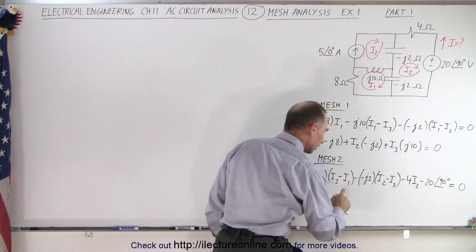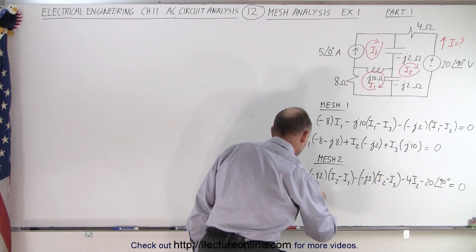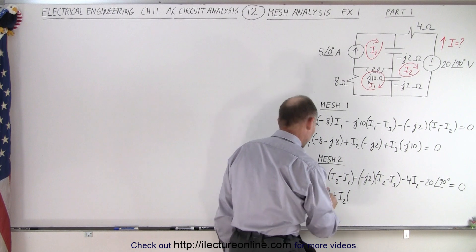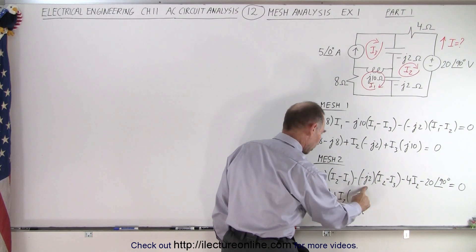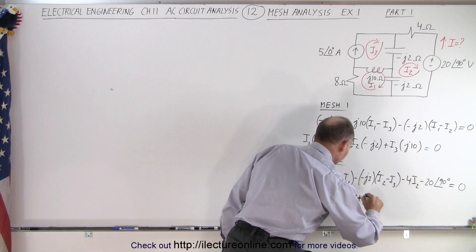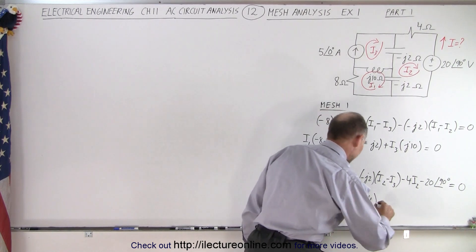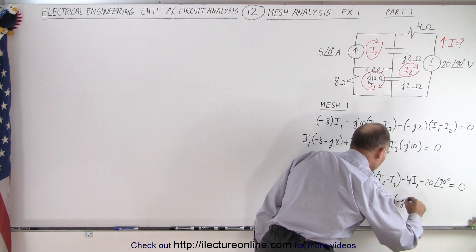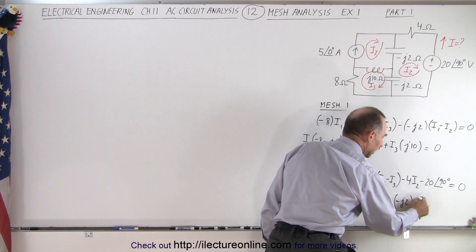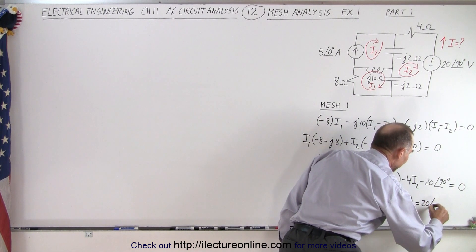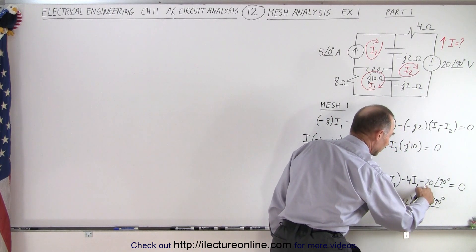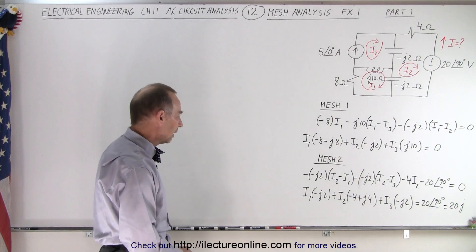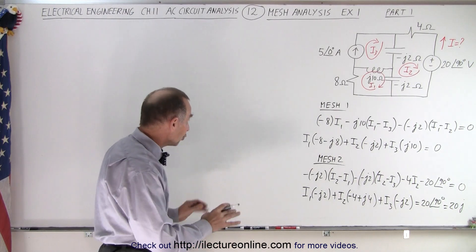Simplifying that equation and collecting all the I's: for I1 we have a minus times a minus times a minus, so that's I1 times minus J2. Plus I2 — we have a plus J2, another plus J2, and a minus 4, so that's minus 4 plus J4. Plus I3 — minus times a minus times a minus gives minus J2. And a minus 20 at 90 degrees moved to the other side becomes plus 20 at 90 degrees, which is plus J20. So that equation equals plus J20.